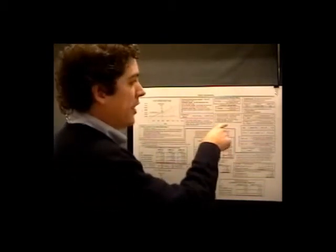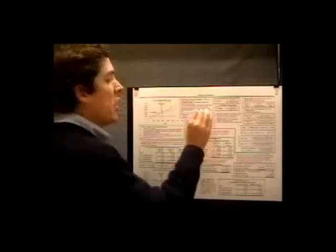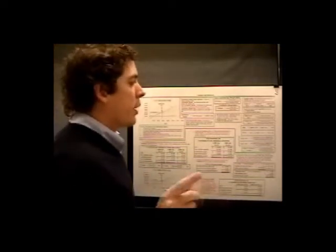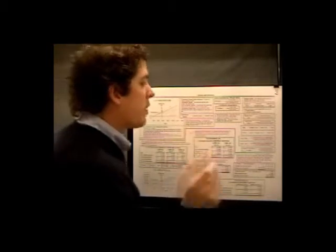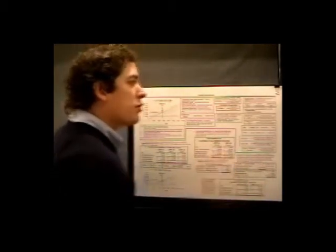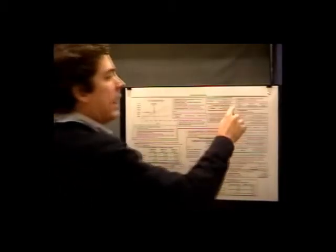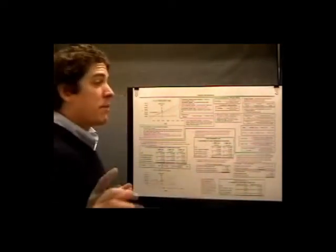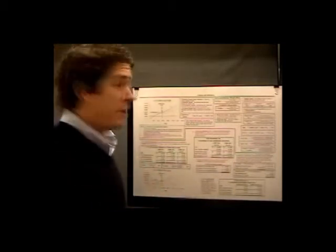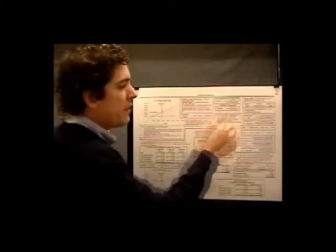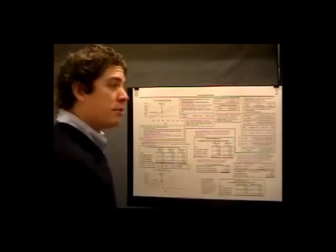Break-even analysis determines the level of sales in units and sales dollars required for a company to break even. The break-even point is the point at which the company will make zero profit. Margin of safety is the difference between actual or budgeted sales and the break-even point — margin of safety equals actual or budgeted sales minus break-even sales. Break-even analysis can be approached two ways: equation method or contribution margin method. Break-even sales equals total fixed costs divided by contribution margin ratio. Break-even units equals total fixed costs divided by unit contribution margin.